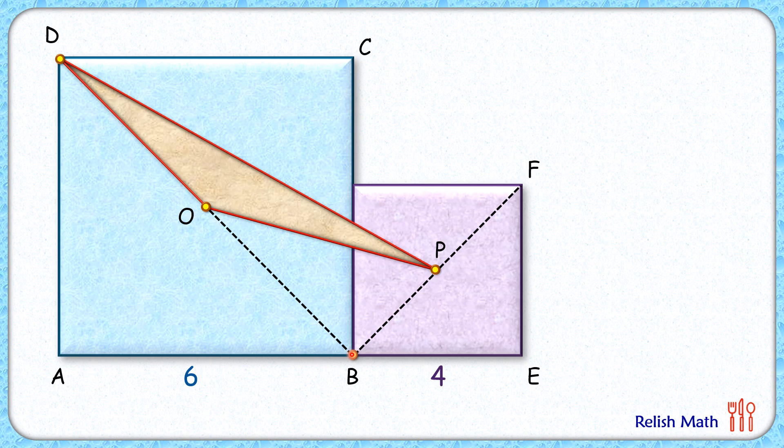We know diagonal length in a square is root 2 times of the side length, so DB length will be 6 root 2.